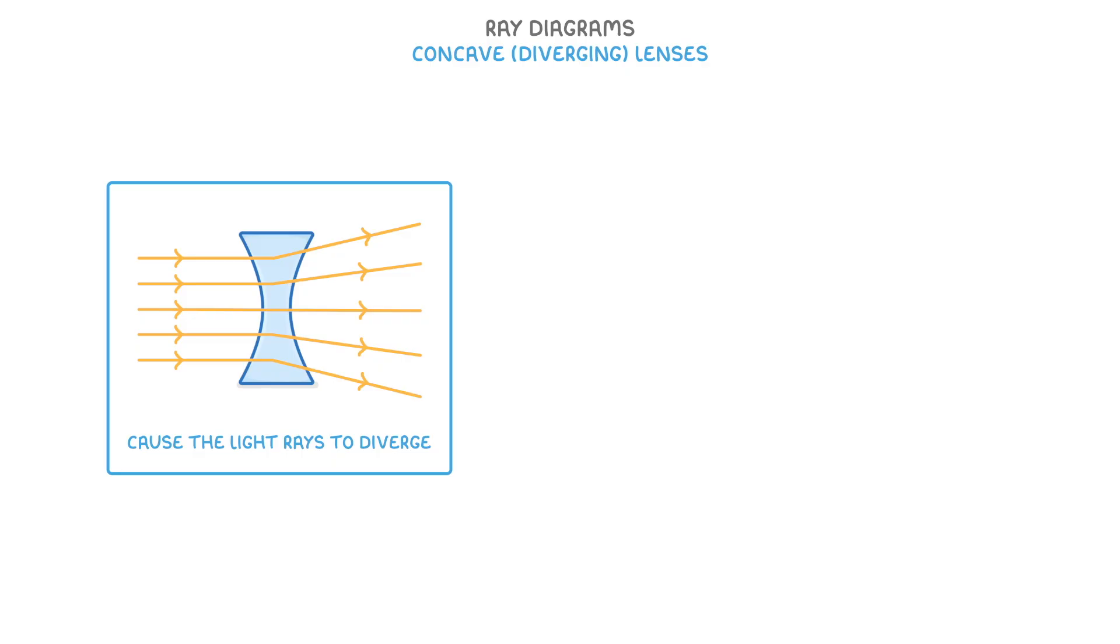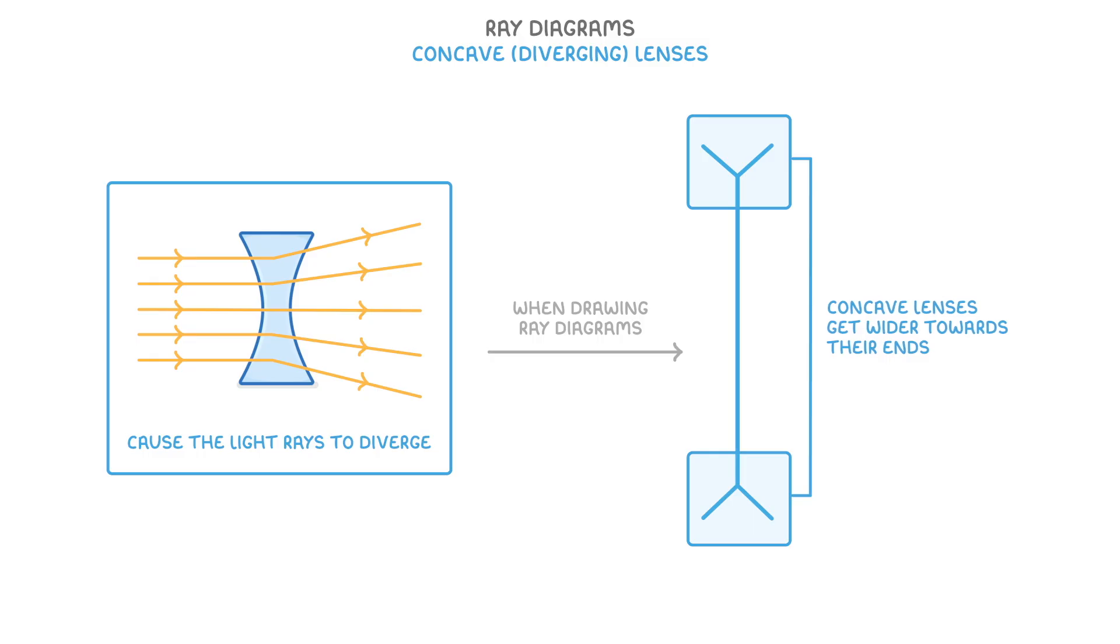To represent a concave lens when you're drawing a ray diagram, we use this symbol here, and you can see that it has these outwards-pointing V shapes at either end, because they show that concave lenses get wider towards their ends.